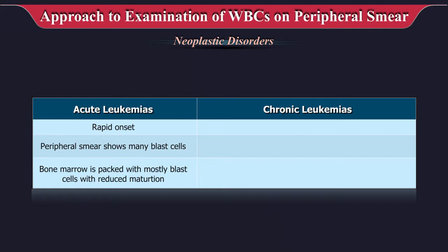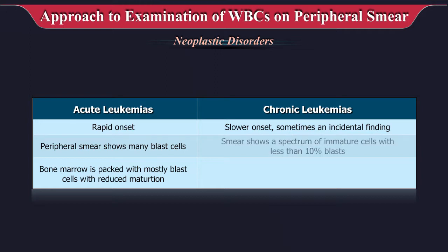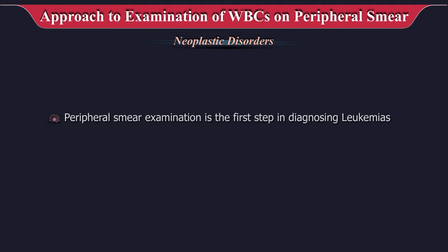Chronic leukemias have a slower onset and are sometimes discovered as an incidental finding. The smear shows a spectrum of immature cells with less than 10 percent blasts. Bone marrow is hypercellular with all stages represented. Peripheral smear examination is the first step in diagnosing leukemias.